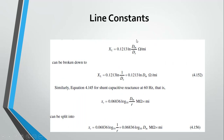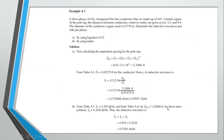The overall formulas for X_L and X_C are: X_L = 0.1213 · log(D_M / D_S) Ω/mile, and X_C = 0.06836 · log(D_M / R) MΩ·mile. These are the standard formulas used in power transmission calculations.